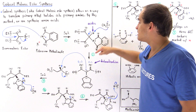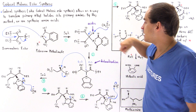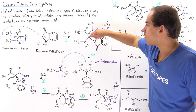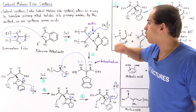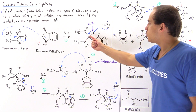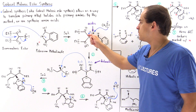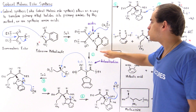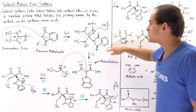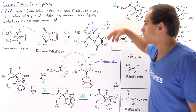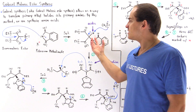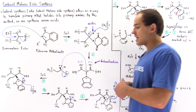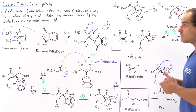This gives us a tetrahedral molecule where the central carbon is attached to four groups: this group here, this group here, the hydrogen atom, as well as the phthalimide molecule that has attached itself to this carbon in the first step.